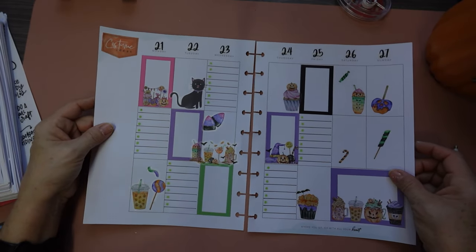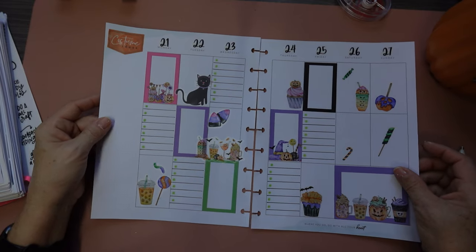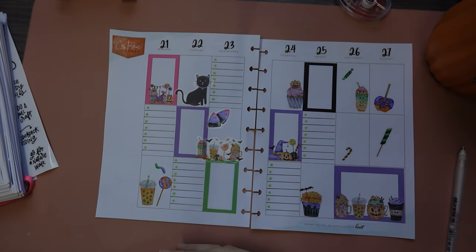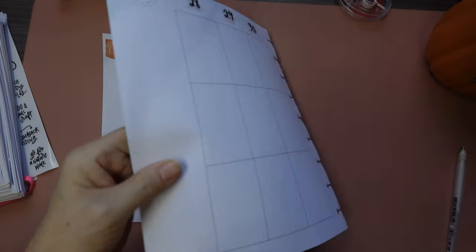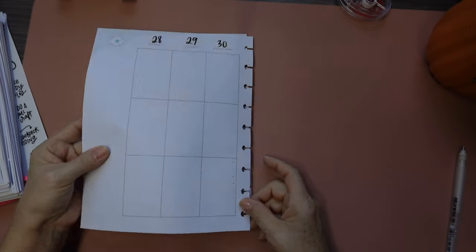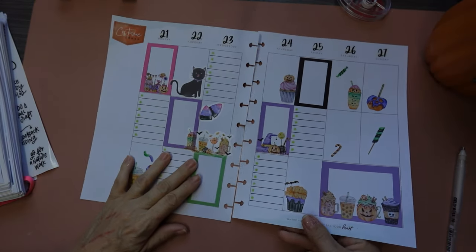All right, so that's it, that's this week's spread for October 21st through the 27th and then we have Halloween week which I don't even know what I'm going to do.